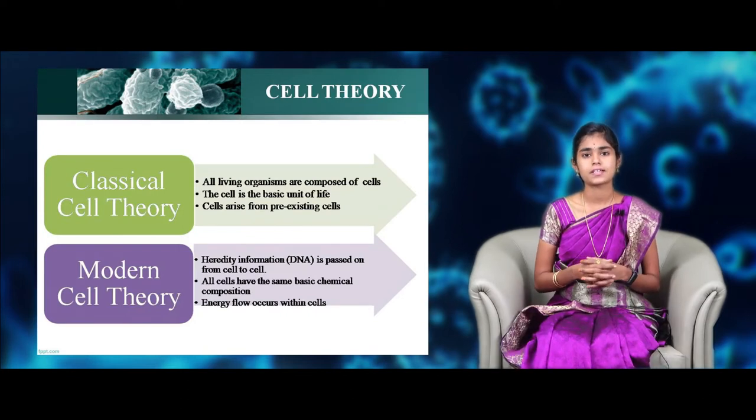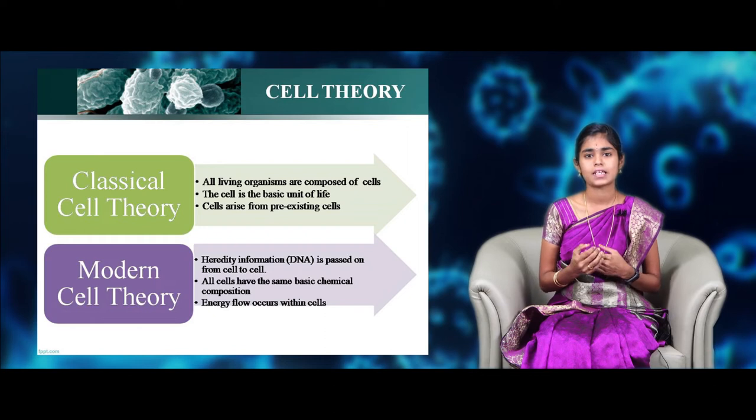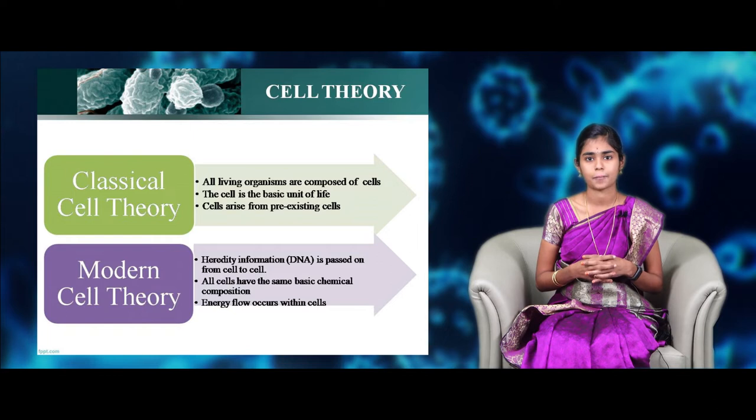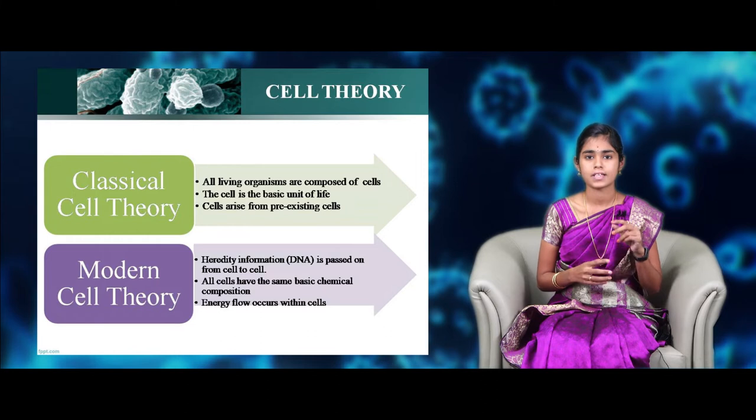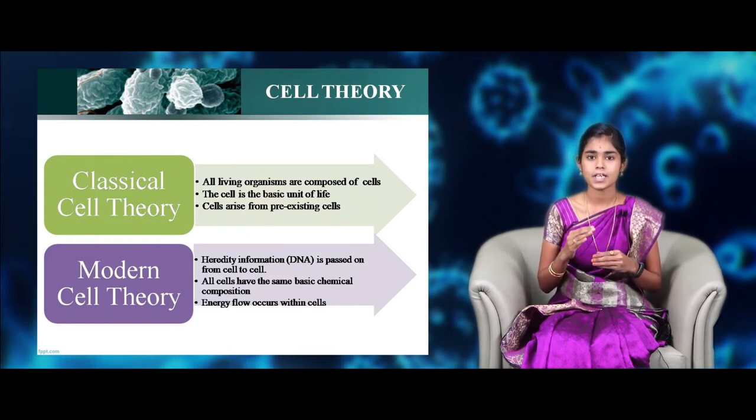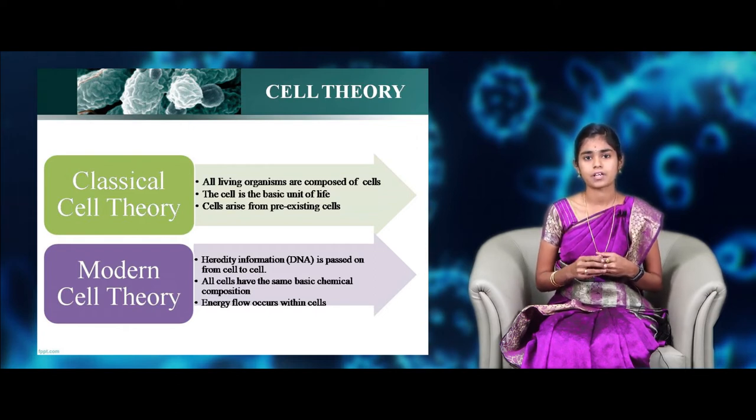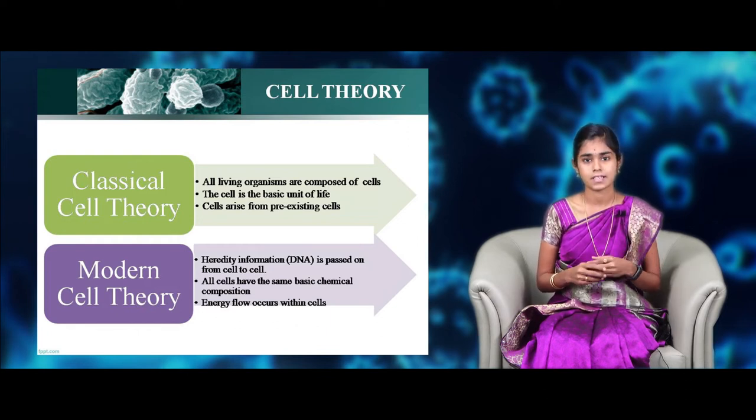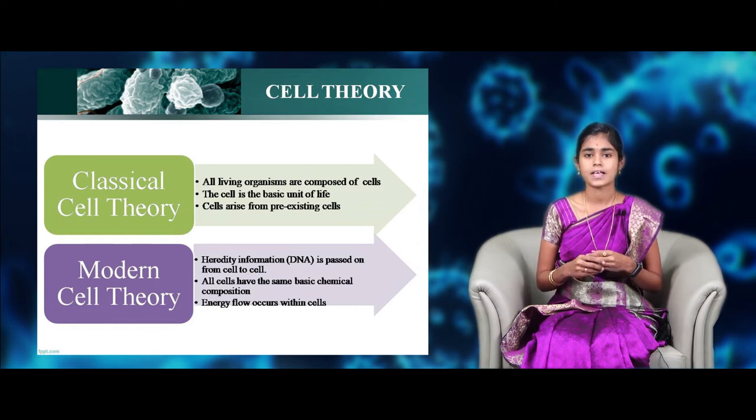Now, let us look into the cell theory. The discovery of cells leads to the development of classical cell theory. In the year of 1839, Schwann and Matthias proposed cell theory. The first part of the cell theory is that all organisms are made up of cells. The second part of the theory is that cells are the basic unit of life. In the year of 1858, Rudolf Virchow stated that all cells come from the pre-existing cells through the process of cell divisions.